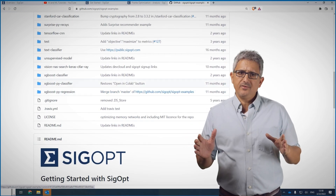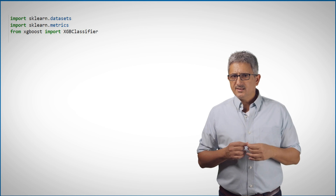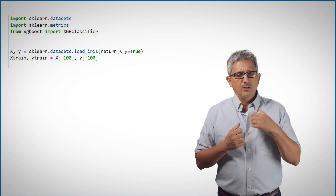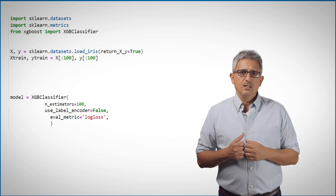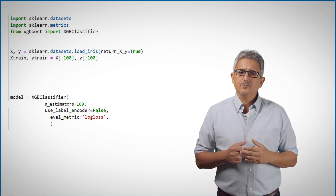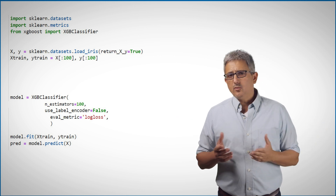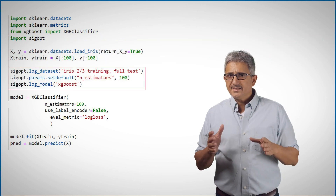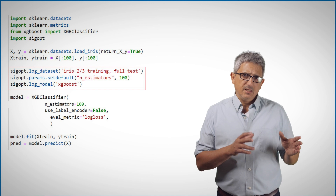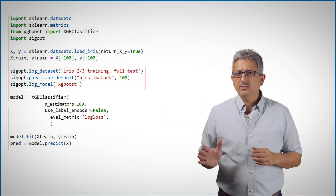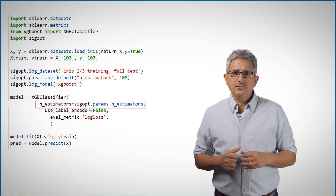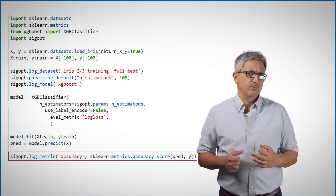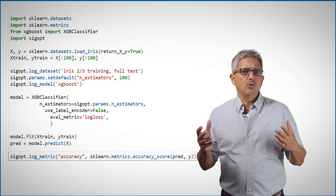This is the simplest example I found to demonstrate how easy it is. The example is using XGBoost. We import the right libraries and load the scikit-learn iris dataset, do classification using XGBoost, and run the model — nothing new so far. Now we import SIGopt, log the dataset, the model, and the parameters. Here is just one parameter, n_estimators, passed into SIGopt. We use SIGopt tracked parameters and track the metric value and name for each run — just a few lines added to our model code.